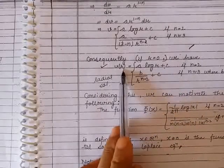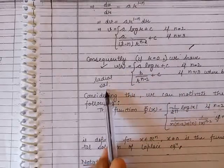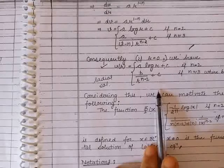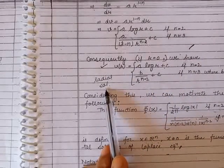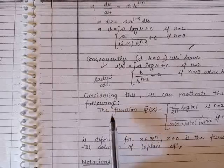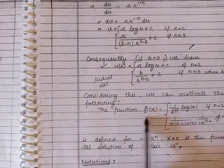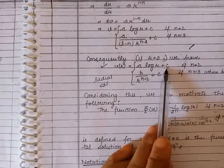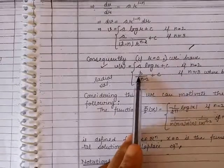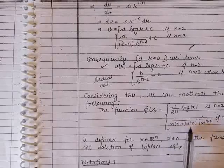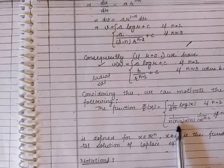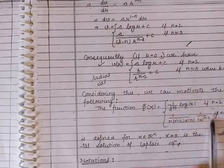Such solutions that are functions of r are called radial solutions; this is the radial solution of Laplace equation, also called the fundamental solution. Considering this expression we can motivate the following definition. Taking c = 0, a = −1/(2π) for n = 2, and b = 1/(n(n−2)αₙ) for n ≥ 3, this yields a standard form called the fundamental solution of Laplace equation, which is the form we will use further.